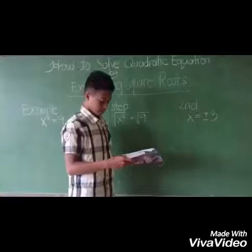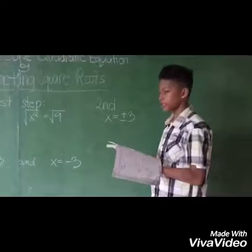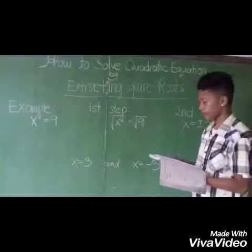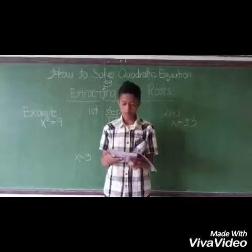We should make sure not to forget to put the plus or minus sign on your answer, because that means it has two possible roots. It may be x equals 3 and x equals negative 3. So that's how you solve quadratic equations by means of extracting square roots.